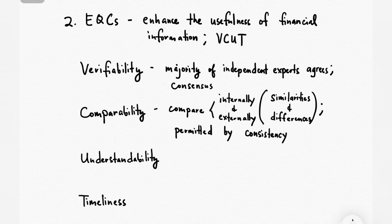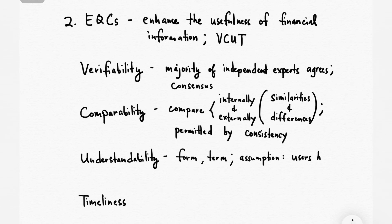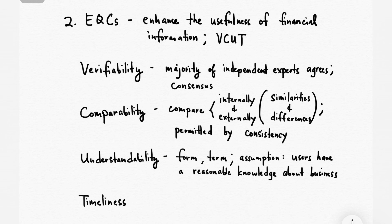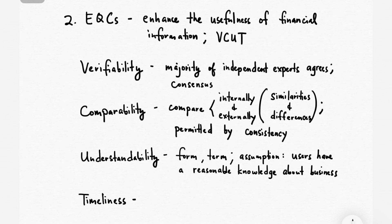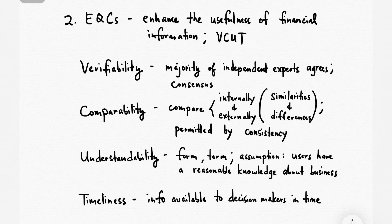For the third one, understandability — this refers to the form and term used, and here there is an assumption: you are assuming that the users have a reasonable knowledge about business. So for this, what you do is just present the information how it should be presented, knowing that users can understand it. And for the last one, timeliness — an information is timely if it is available to decision makers in time before they make their decision.